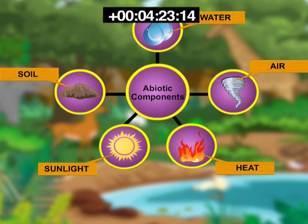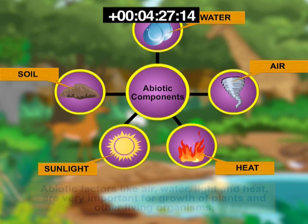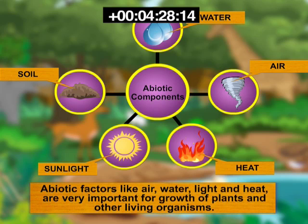Sunlight and heat also form abiotic components of the habitat. Abiotic factors like air, water, light, and heat are very important for the growth of plants. In fact, these abiotic factors are important for all living organisms.